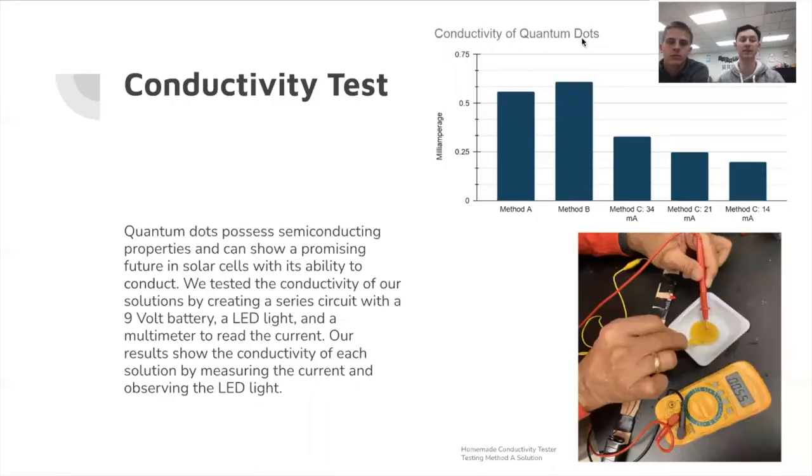Another test that we did to further prove the presence of our quantum dots was the conductivity test. We know the quantum dots possess semiconducting properties, and we wanted to test this by creating a series circuit with a 9-volt battery and a multimeter. You can see here in our data that all of our solutions were able to pass a current, therefore further proving the existence of our quantum dots.